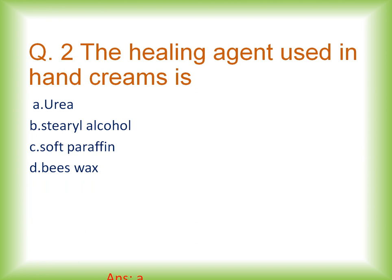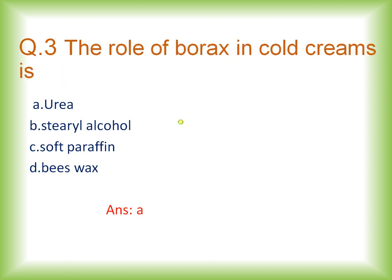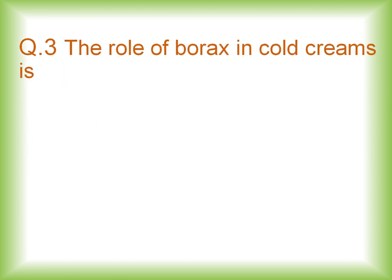Question number two: the healing agent used in hand cream — options are urea, sterile alcohol, soft paraffin, and beeswax. The right answer is option A, urea. So urea is used as a healing agent in hand creams.